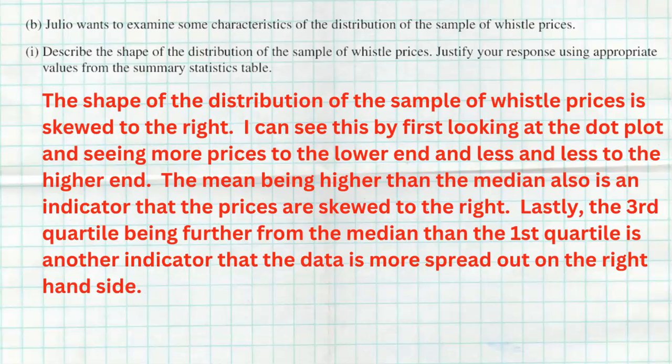The first thing I said was the shape of the distribution of the prices of whistles is skewed to the right. That's what my eyes saw, but I need to back that up with some values from the summary statistic. I said I can see this first by looking at the dot plot and seeing that there's more prices to the lower end and less and less prices to the higher end, showing that it's skewed right. I also noticed that the mean was higher than the median. When your mean is higher than the median, that is another sign that you're going to be skewed to the right, because when you're skewed to the right, the mean's going to get pulled towards the right and hence be higher than the median. If you look at that summary statistics table, you clearly see that the mean is bigger than the median. Lastly, the third quartile being further from the median than the first quartile is another indicator that our data is more spread out to the right-hand side. The distance between the median and the third quartile is longer or more spread apart than the distance between the first quartile and the median. That's another sign that our data is skewed to the right.